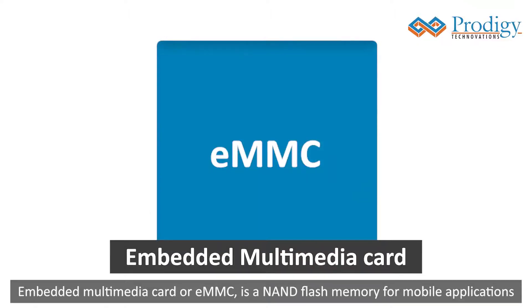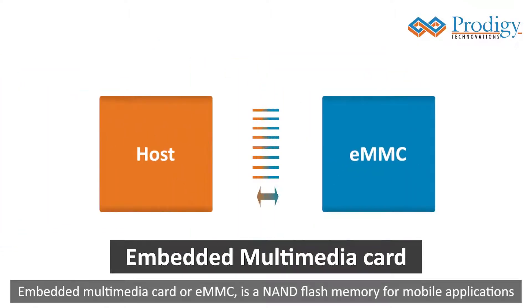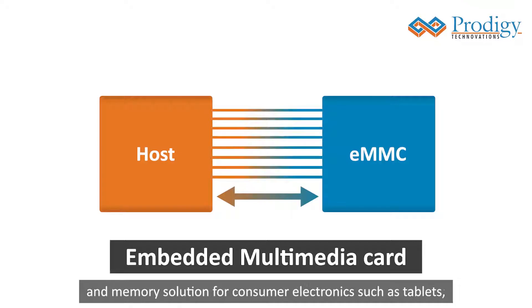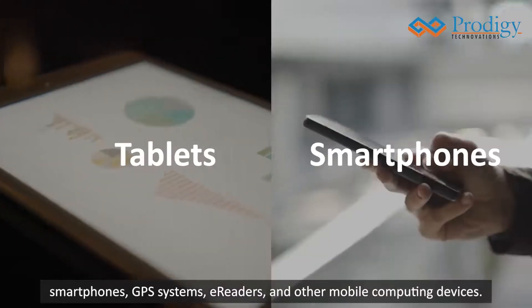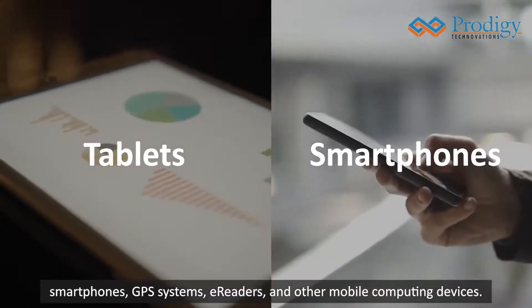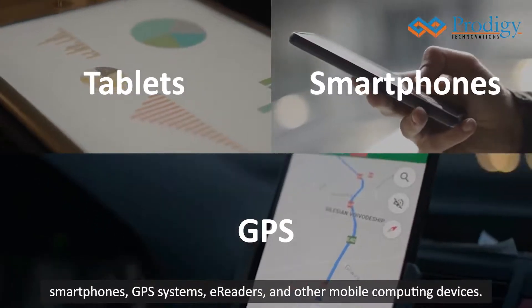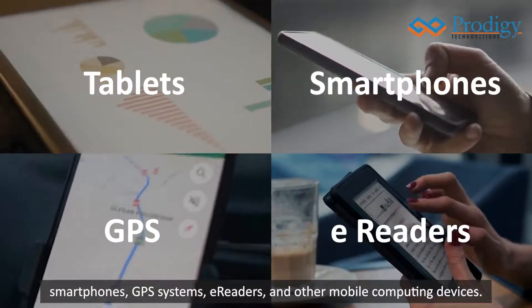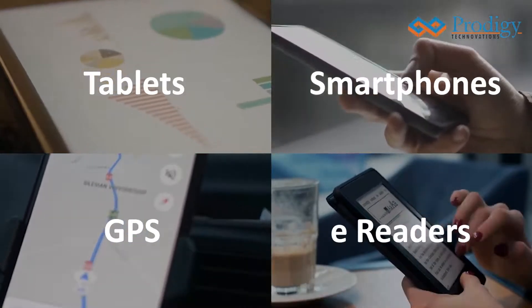Embedded Multimedia Card, or EMMC, is a NAND flash memory for mobile applications and a memory solution for consumer electronics such as tablets, smartphones, GPS systems, e-readers, and other mobile computing devices.